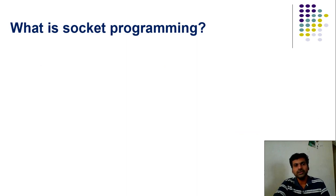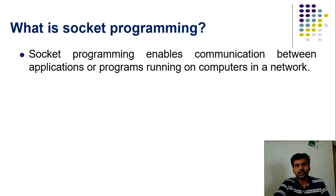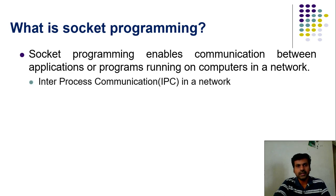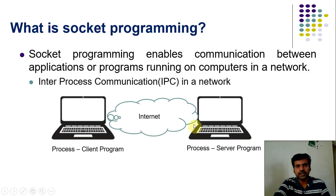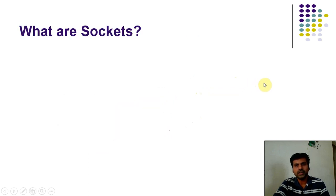What is socket programming? You can use socket programming for creating a network-based application system. Socket programming enables communication between applications running on computers in the network. Basically it creates an inter-process communication between two applications in the network. For example, you can assume a network of two computers — a Python client program and a Python server program — and with the help of socket programming you can make these two applications communicate with each other.